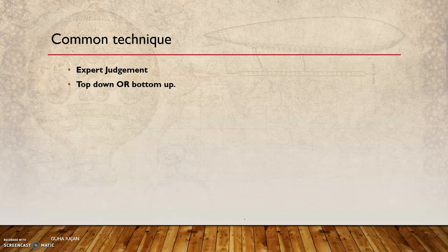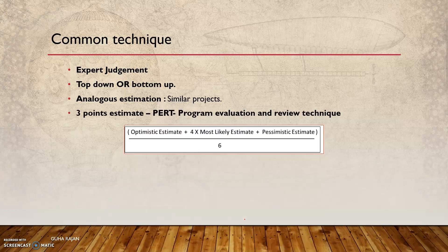Due diligence needs to be given to estimation. The common techniques are expert judgment, top-down, bottom-up, analogous estimate, and finally the three-point estimate, which is also called PERT — Program Evaluation and Review Technique. Most common are expert judgment and analogous estimate. For projects, analogous estimate or expert judgment is used. For a product — like making a television or mobile phone — it is a repetitive process: if the cost of making a mobile is ten dollars, you price it at fifty dollars including overhead.